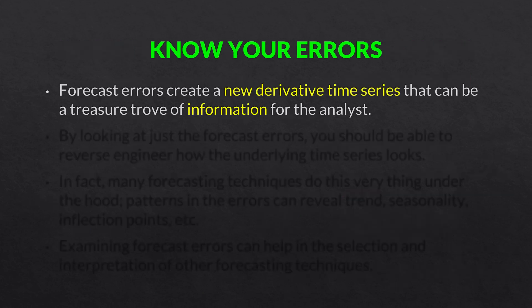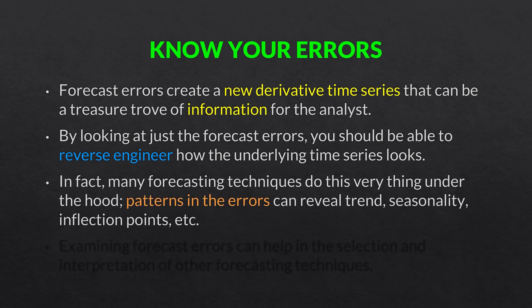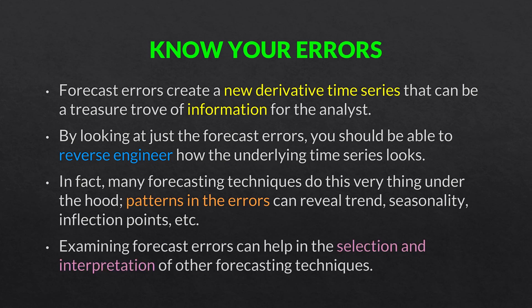Always know your errors. Forecast errors create a new derivative time series that can be a treasure trove of information for the analyst. By looking at just the forecast errors, you should be able to reverse-engineer how the underlying time series looks. In fact, many forecasting techniques do this very thing under the hood. So patterns in the errors can reveal trend, seasonality, inflection points like we just saw, and so on. Examining forecast errors can also help in the selection and interpretation of other forecasting techniques. The linear trend projections showed very high errors at the beginning and at the end of our time series, which led us to try a curvilinear model — and that is what we did.